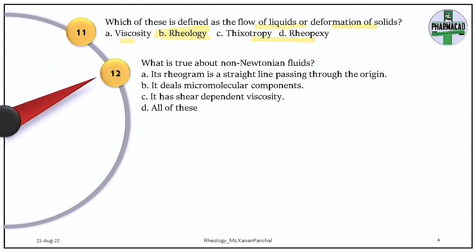Question 12. What is true about a non-Newtonian fluid? The answer is C — it has a shear-dependent viscosity, meaning its viscosity is not constant at a particular shear stress; as shear stress changes, its viscosity also changes. The statement that its rheogram is a straight line passing through the origin is false — that is true for a Newtonian system. A Newtonian system's rheogram is a straight line proportional through the origin, but for non-Newtonian systems like plastic, it does not pass through zero.